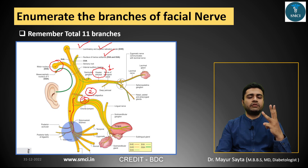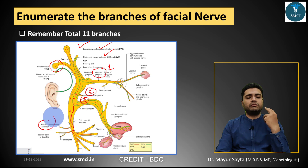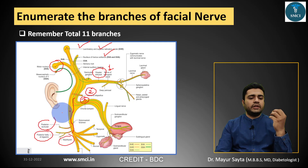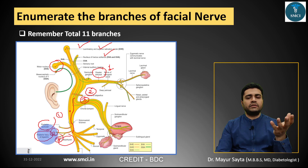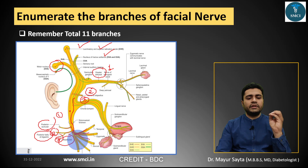The nerve then comes out from the stylomastoid foramen and gives posterior branches. The fourth branch is the posterior auricular nerve. It also gives two more branches: the nerve to the posterior belly of the digastric and the nerve to the stylohyoid muscle. So three more branches — posterior auricular, nerve to posterior belly of digastric, and nerve to stylohyoid.